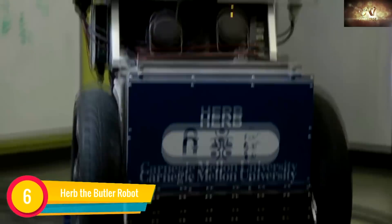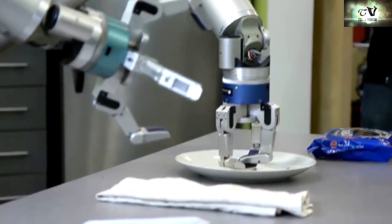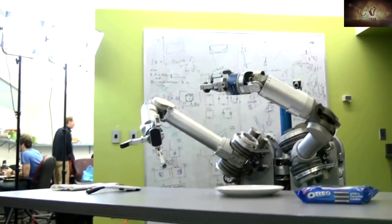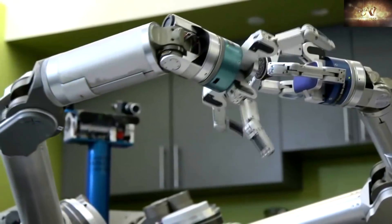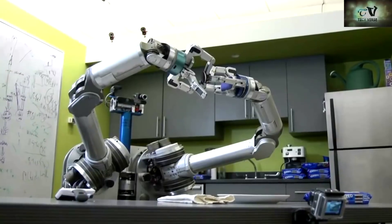Herb, the Butler Robot. Herb, as it is popularly called, is a research robot. But over the years, it has learned to grab things, tidy up living rooms, and microwave dinner.